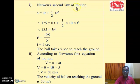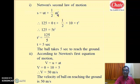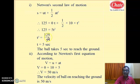Newton's second equation of motion is s = ut + ½at². Since it is free fall, initial velocity u = 0, so the equation becomes 125 = ½ × 10 × t². This simplifies to 125 = 5t², so t² = 125/5 = 25, giving t = 5 seconds. Hence the ball takes 5 seconds to reach the ground.